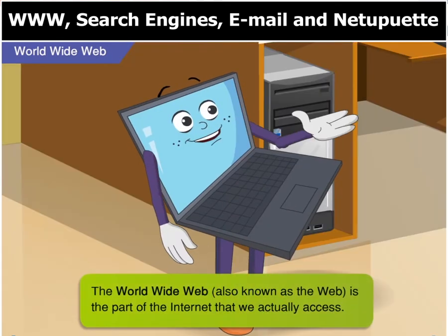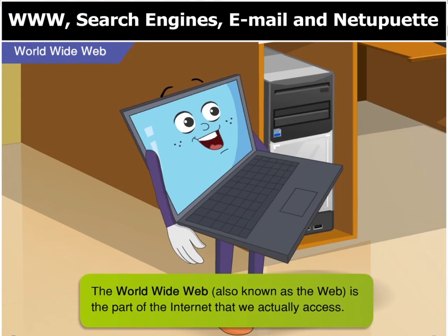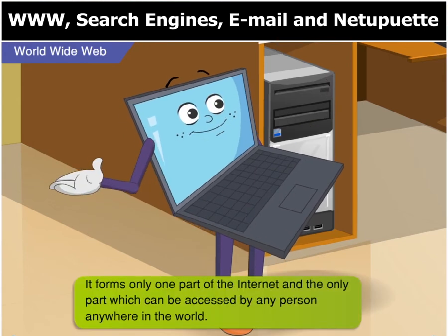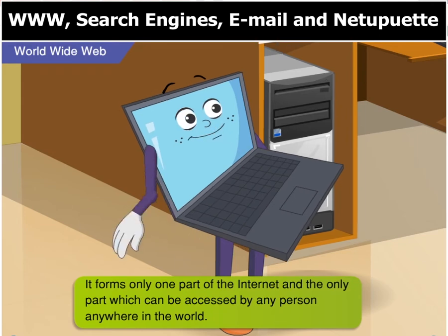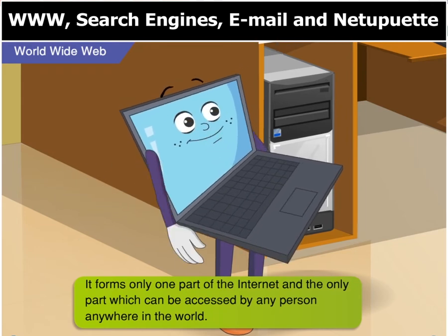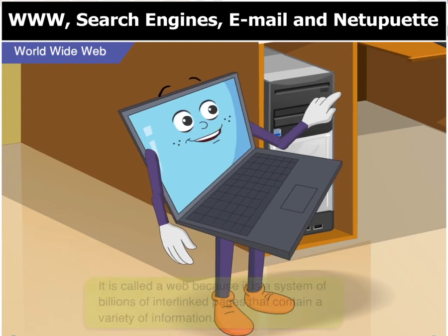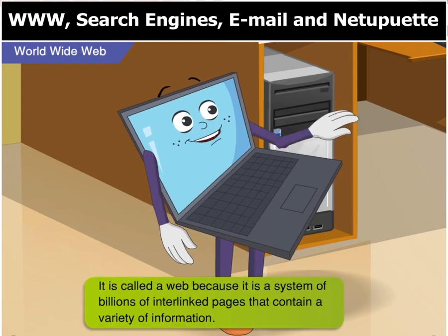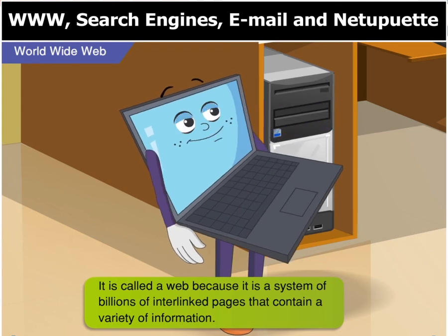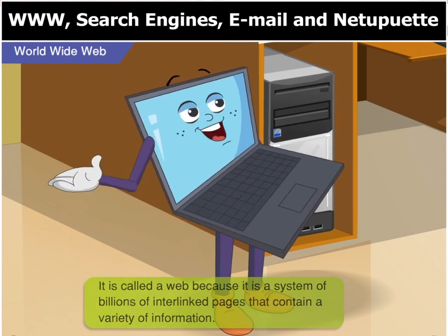The World Wide Web, or simply the web, is the part of the internet that we actually access. It forms only one part of the internet and the only part which can be accessed by any person anywhere in the world. It is called a web because it is a system of billions of interlinked pages that contain a variety of information.